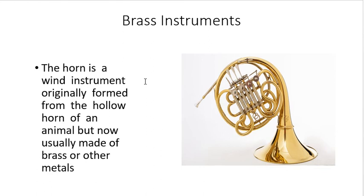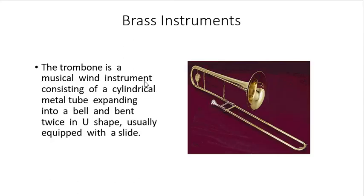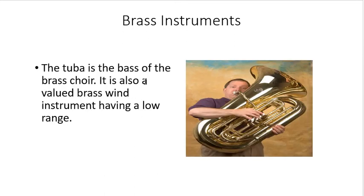We also have the horn. The horn is a wind instrument originally formed from the hollow horn of an animal, but now usually made of brass or other metals. Next is the trombone — a musical wind instrument consisting of a cylindrical metal tube expanding into a bell and bent twice in a U-shape, usually equipped with a slide.